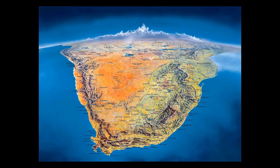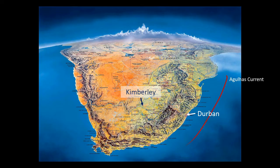Let's look at this concept with a real life example. The two cities we are going to examine are Kimberley and Durban in South Africa. Durban is along South Africa's east coast and sits along the warm Indian Ocean. Durban's average summer temperature is around 26 degrees Celsius and its average winter temperature is around 18 degrees Celsius.